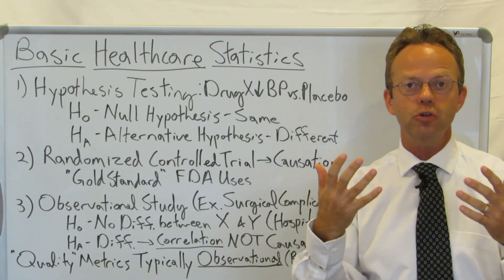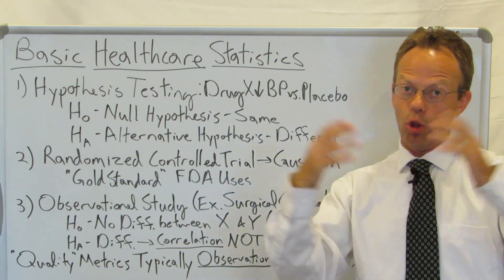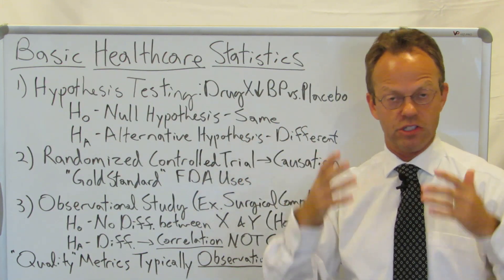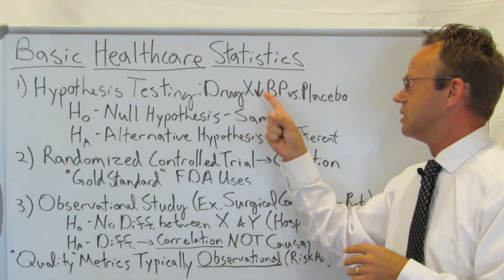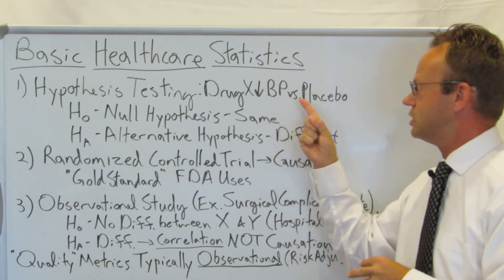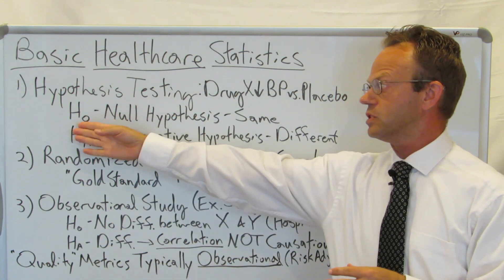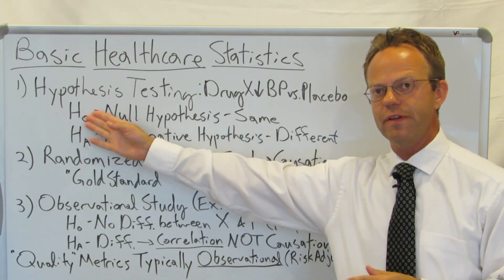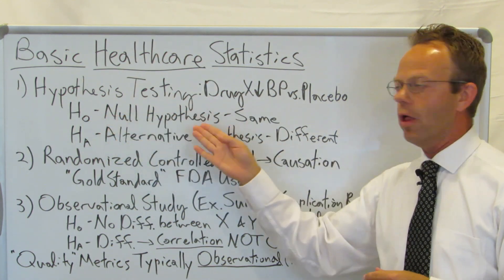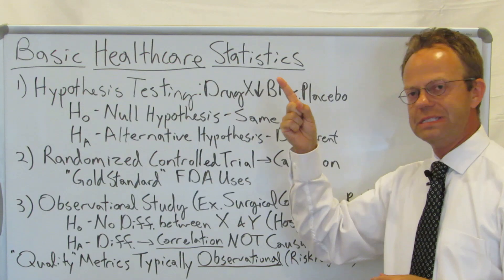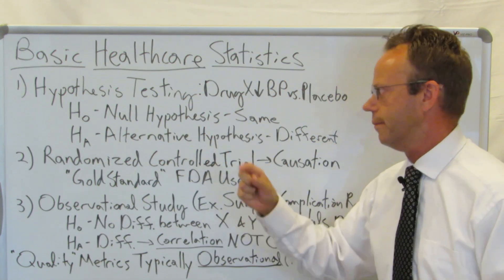Hypothesis testing is typically used in, let's say, a drug trial, but it's used essentially all over the place when you're dealing with statistical analysis. Let's just use a drug trial example where you have drug X — does it lower blood pressure versus placebo? Now you have two hypotheses. You have what's called the null hypothesis, abbreviated H-naught or H sub zero, which means there is no difference between the tested blood pressure drug and placebo.